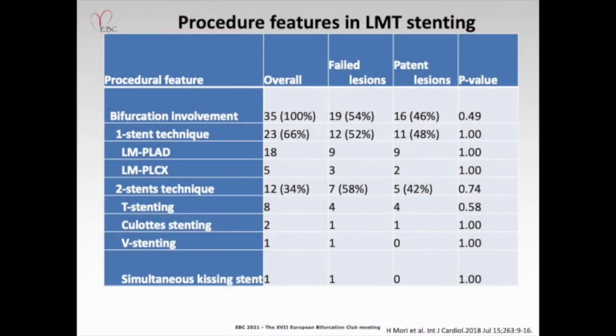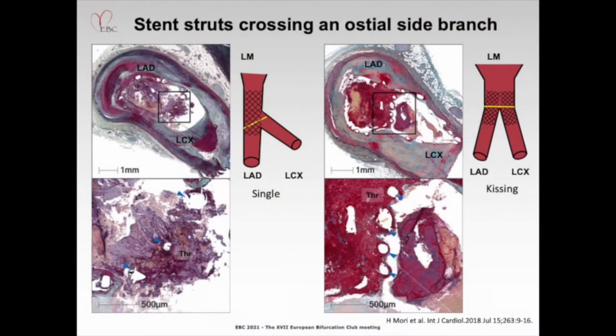I've put together features of left main stenting at the bifurcation from a paper we wrote. We had a total of 35 stents deployed at the bifurcation — failed stents were 54% compared to patent stents at 46%. Here is a single stent case; at the bifurcation there is thrombus formation in the circumflex. On the right is shown a kissing lesion with the LAD and left circumflex — because there are so many struts in the ostial region, that leads to stent thrombosis.